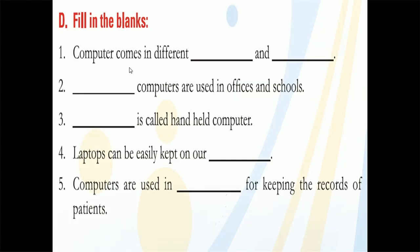Next question — fill in the blanks: computer comes in different blank and blank. Computers come in different sizes and shapes. Some computers are very big, some are very small, and some are handy. Some computers are kept on a desk, some can be kept on a lap like a laptop, and a palmtop computer can be kept in a pocket.